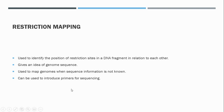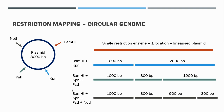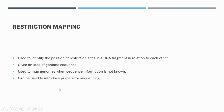In summary, restriction mapping is used to identify the position of restriction sites in a DNA fragment in relation to each other. It gives an idea of the genome sequence and is used to map genomes when we have no information on the sequence. Restriction enzymes can also be used to introduce primers — for example, cleaving a plasmid with BamHI to linearize it and then introducing a known DNA sequence for sequencing. This technique was used before DNA sequencing came about and was very useful for mapping genomes before modern technology was available.